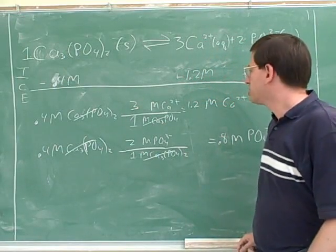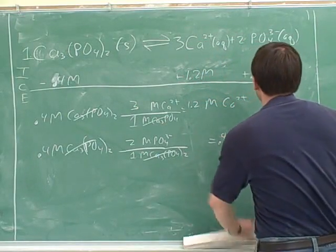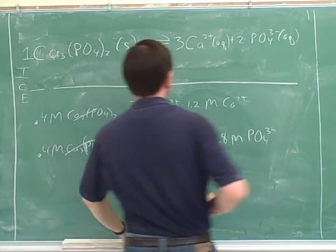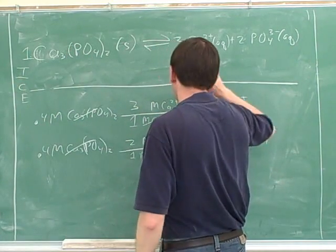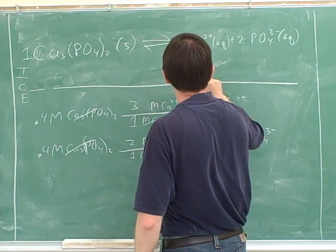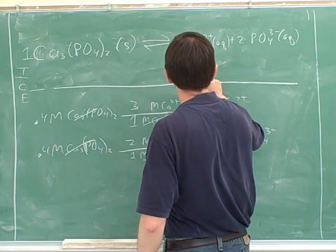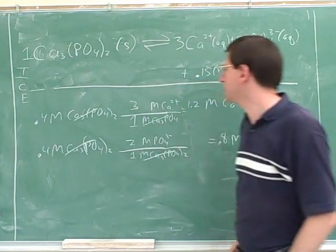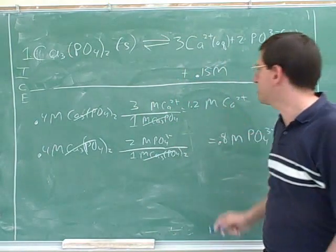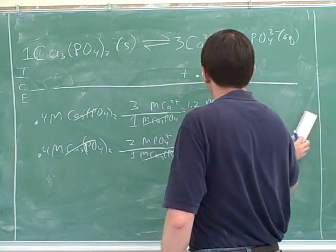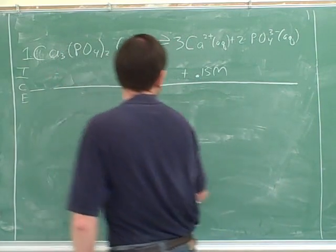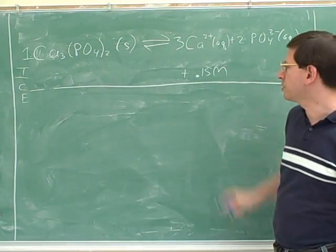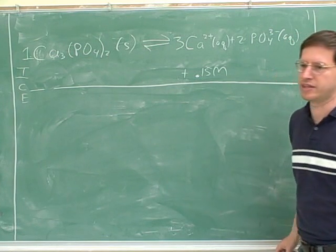Notice, though, that you could go in the reverse direction. Suppose I had started. Maybe we should do this. So let's say we have that this is plus 0.15 molar. Let's see if we can figure out all the other changes. So if this is plus 0.15 molar, what does that tell us about the other changes?